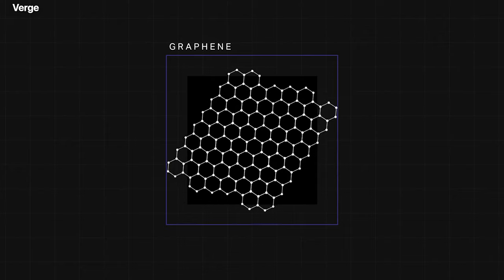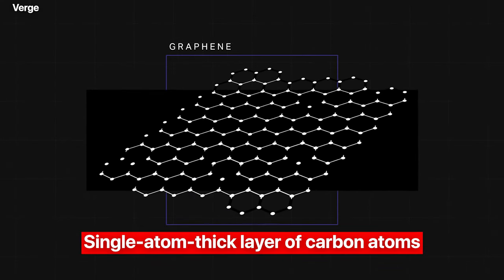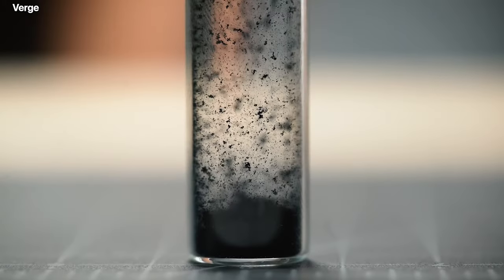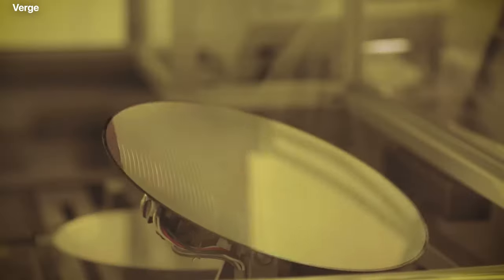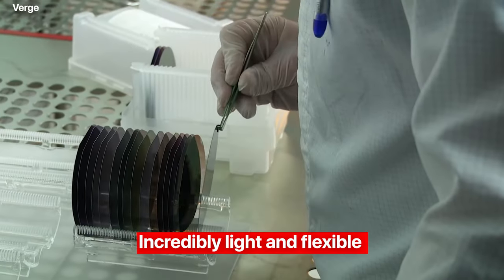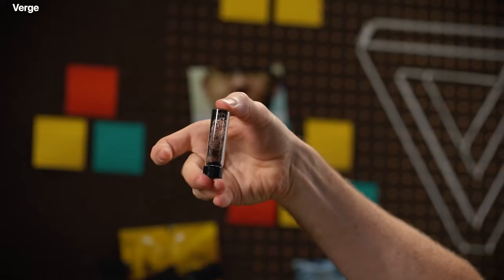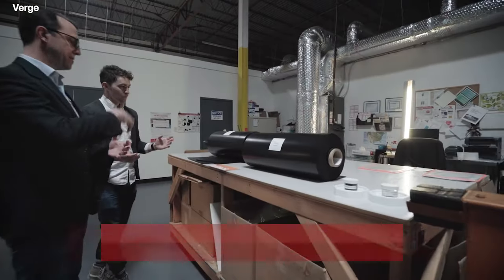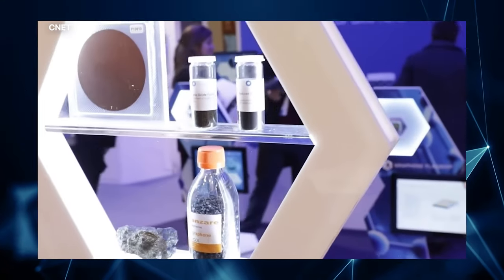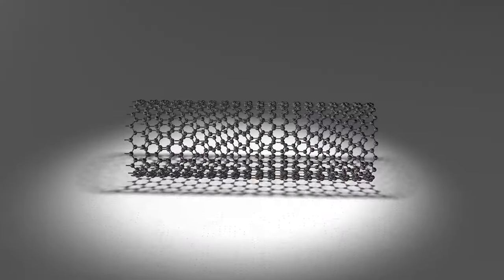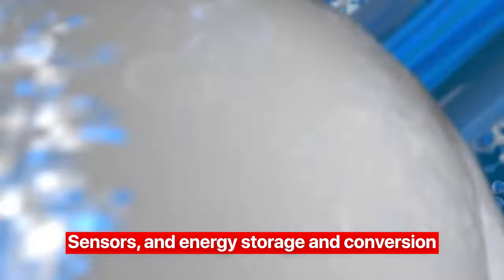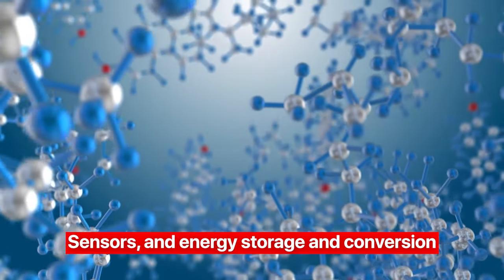Graphene. Graphene is a single atom thick layer of carbon atoms arranged in a hexagonal lattice. It is one of the strongest and thinnest materials and has many potential applications. Graphene is incredibly light and flexible, yet extremely strong and durable. It is also a good conductor of electricity and heat, and can be used to create transparent conducting materials. Its potential applications include electronics, optoelectronics, photonics, sensors, and energy storage and conversion.